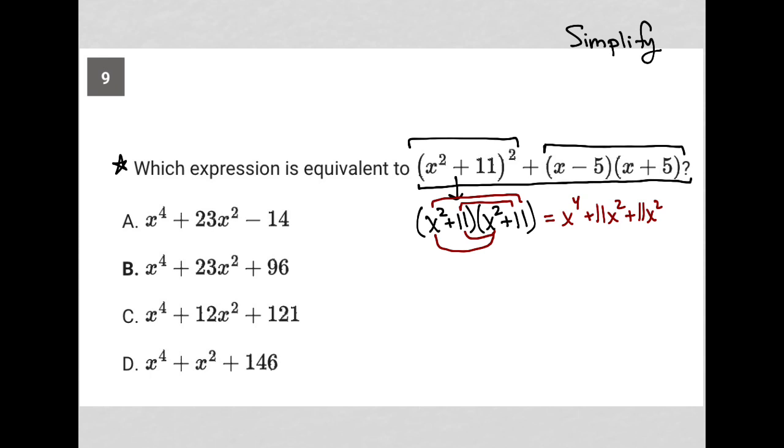Right, that's FOIL: first, outer, inner, last. 11 times 11 is 121. Simplifying that, I can combine these like terms here and get x to the fourth plus 22x squared plus 121. So that takes care of this.